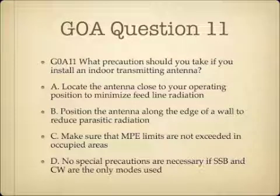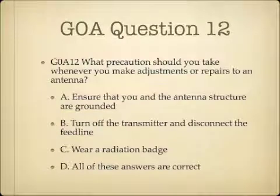Question 11. What precautions should you take if you install an indoor transmitting antenna? A, locate the antenna close to your operating position to minimize feed line radiation; B, position the antenna along the edge of a wall to reduce parasitic radiation; C, make sure that MPE limits are not exceeded in occupied areas; or D, no special precautions are necessary if single sideband and CW are the only modes used? Question 12. What precautions should you take whenever you make adjustments or repairs to an antenna? A, ensure that you and the antenna structure are grounded; B, turn off the transmitter and disconnect the feed line; C, wear a radiation badge; or D, all of these answers are correct?